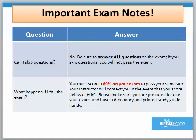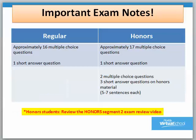Don't skip any questions on the exam — make sure you answer everything. If you do fail the exam, you will be contacted by your instructor. You must score a 60% or higher to pass your current semester of the course. Please make sure that you are prepared and take your exam study guide and a dictionary with you. Note: there are two versions of the segment 2 exam — a regular version and an honors version.